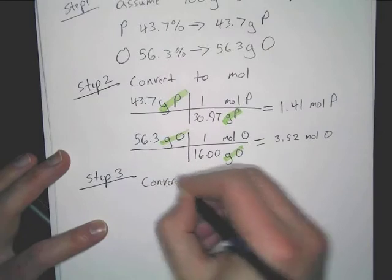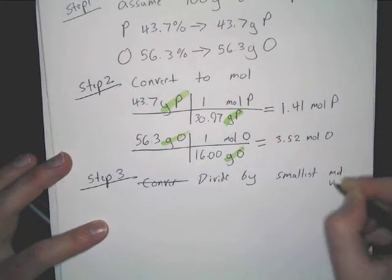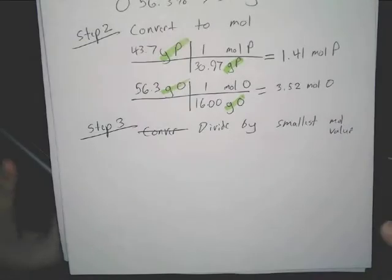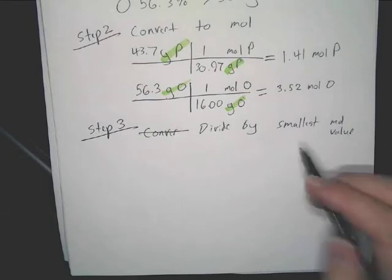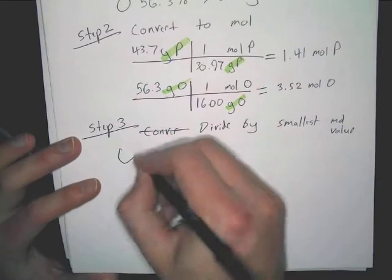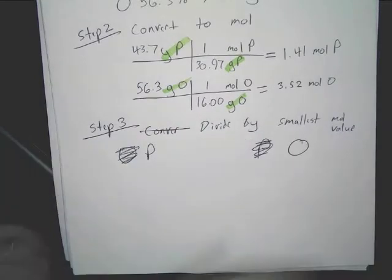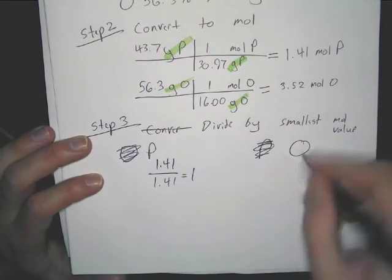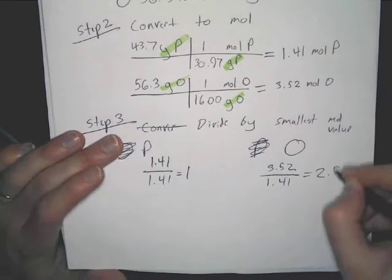Step 3. Don't convert to moles. Divide by smallest value. Now divide by smallest value. So which one is smaller obviously? Which number is smaller? 1.41. Thank you, 1.41. Then let's actually do that. To not confuse you, I'm going to keep it in the order that it was given to us, P and O. So we've got 1.41 divided by 1.41, that gives us obviously 1. And then 3.52 divided by 1.41, what does that give us? I have a pretty good idea. 2.5, right? So 2.5.